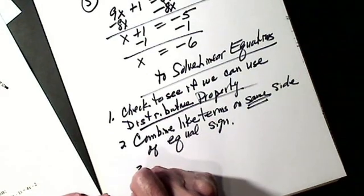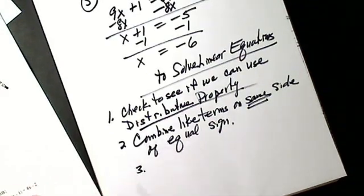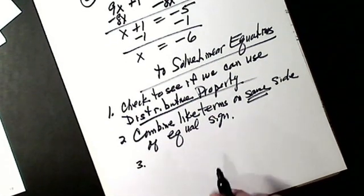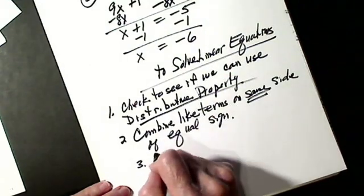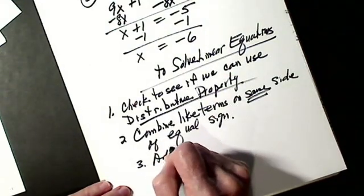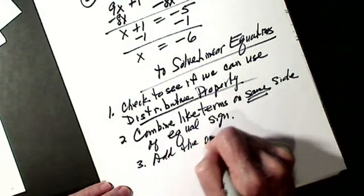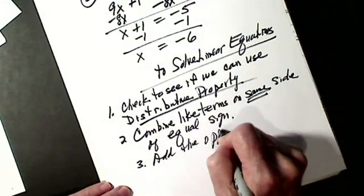Third step: we want all our X's on one side. So we're going to add the opposite of the variable term.